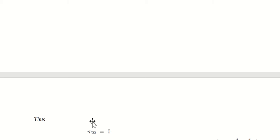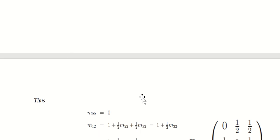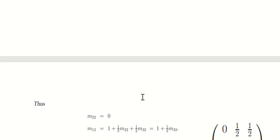We know that M2-2 is equal to zero, because the time it takes to get from state II to state II is zero — you're already there. The expected amount of time to get from state I to state II is 1 plus one-half times M2-2, plus one-half times M3-2, which is the probability of going from state I to state III times the expected time from state III to state II. This simplifies to 1 plus one-half times M3-2. But we can't solve this without figuring out M3-2.